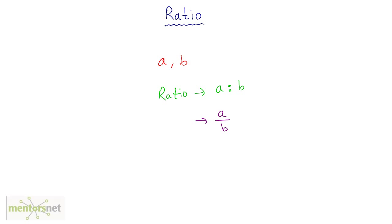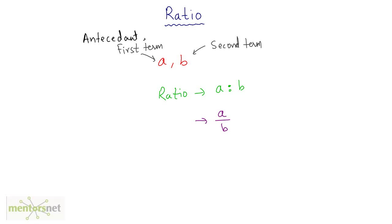Let us look at the terminology used in ratios. The first term, a, is the numerator and is also called the antecedent. The second term, b, is called the consequent. You should know these terms because sometimes there are questions that make use of them.